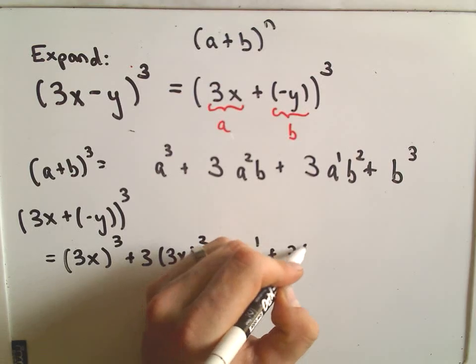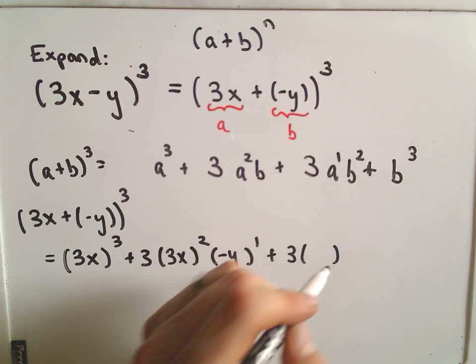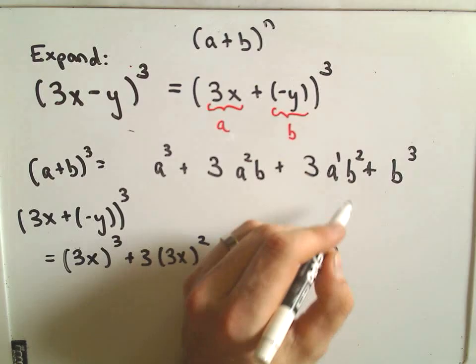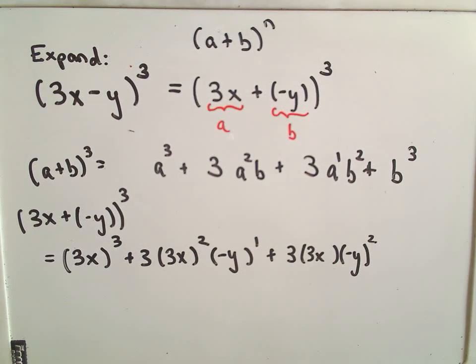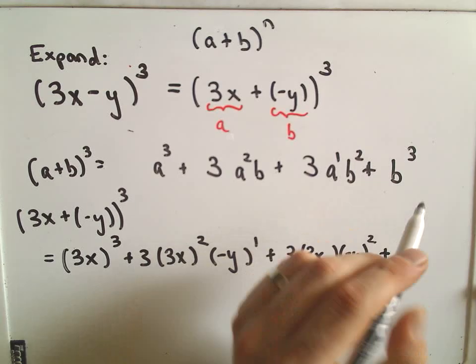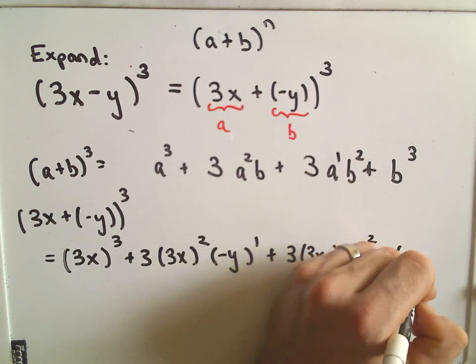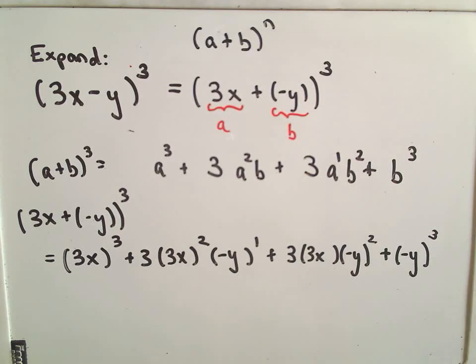And then we'll have plus 3 times a to the first, which is 3x, b squared, we'll have negative y squared. Then our last term, when we plug it in, we'll have b cubed, b is negative y to the third power.